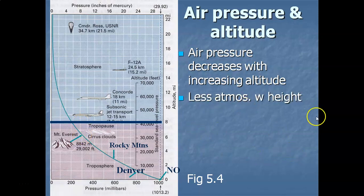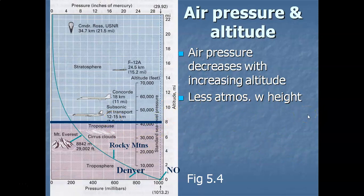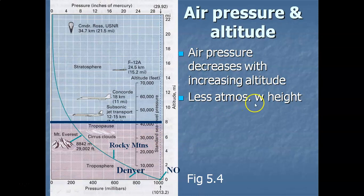The conclusion is: the higher you go in the troposphere, the less atmosphere you have above you, resulting in less weight pressing down. There is less atmosphere, hence less weight, with increasing height in the troposphere.